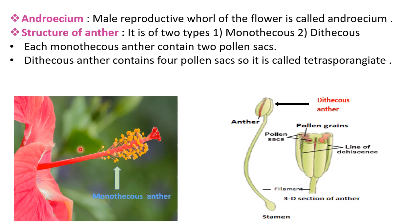Androecium is one of the essential whorls of the flower. Androecium is the male reproductive whorl, and its members are called stamens. Each stamen is differentiated into three parts: the upper enlarged part is called the anther, the stalk of the anther is called the filament, and the anther and filament are connected with the help of a connective. Now we will see the structure of the anther.